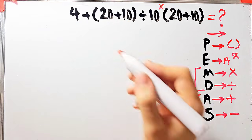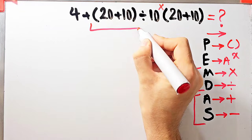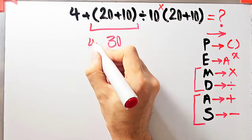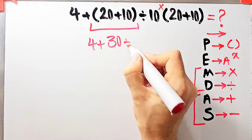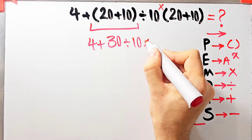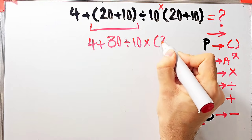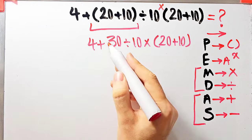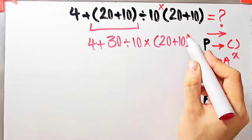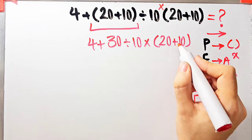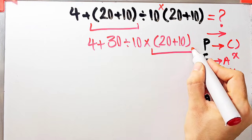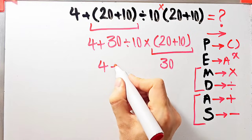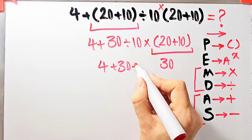According to the PEMDAS rule, first we simplify the first parenthesis: 20 plus 10 equals 30. Now we have 4 plus 30 divided by 10, then times open parenthesis 20 plus 10 close parenthesis. Again we simplify the remaining parenthesis: 20 plus 10 equals 30. Now the question is 4 plus 30 divided by 10, then times 30.